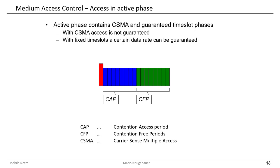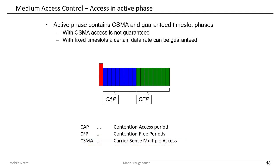In general, the contention access period follows a CSMA — carrier sense multiple access — scheme. This is already known from other standards and is adapted here for this special standard 802.15.4.